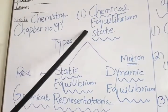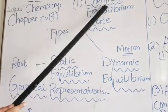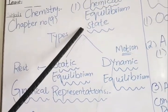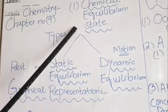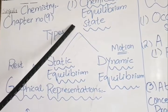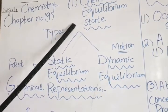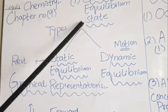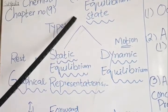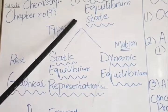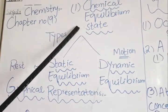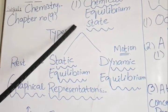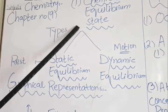Next are the main terminologies. The first one is the chemical equilibrium state. The chemical equilibrium state is very important. When the rate of forward reaction equals the rate of reverse reaction, and the composition of the reaction mixture remains constant, this is called the chemical equilibrium state. The rate of forward reaction will increase and then the rate of reverse reaction will decrease until the rate of both reactions reach equilibrium.